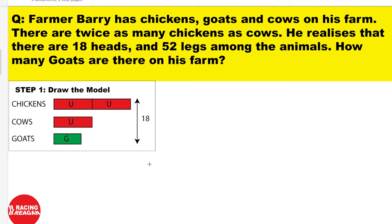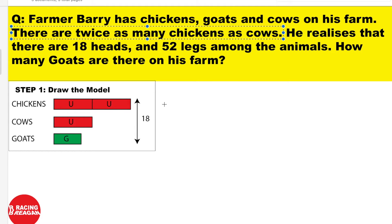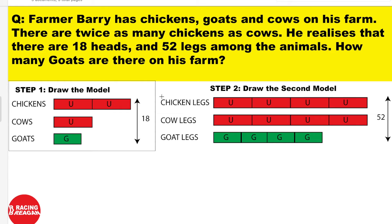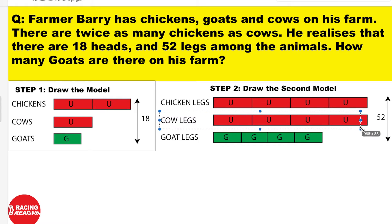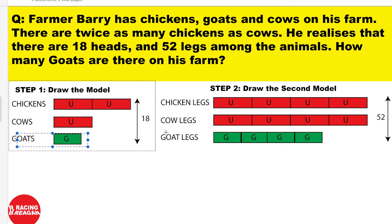So first, you've got to draw the model. Since they said there are twice as many chickens as cows, you will draw chickens as 2 units and cows as 1 unit. We don't know what goats are, so we'll just put goats there without knowing their value. Put the total heads as 18. Then draw the model for legs — chicken legs should have 4 units, because chickens have 2 legs and we have 2 units. Since there is only 1 cow unit and a cow has 4 legs, put cow leg units as 4. Goats also have 4 legs, so put 4 goat leg units. Total legs: 52.